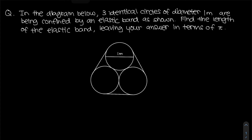So how can we work out the length of the elastic band? Notice that you can actually find the center point of the circles first. Let's connect the centers of the circles. When you connect the centers, this gives you two times the radius on one side, which means that one side of the triangle is one meter.